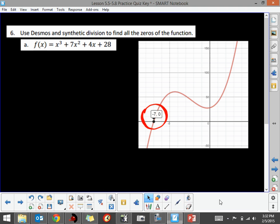So with that in mind, we're going to go to work, and we're going to divide by negative 7. We're going to divide that into the coefficients of 1, 7, 4, and 28.